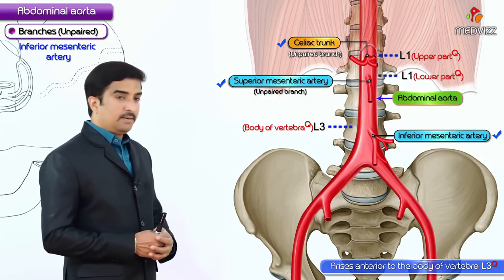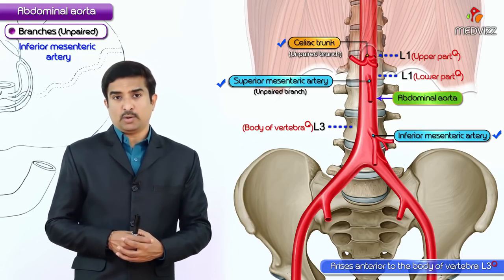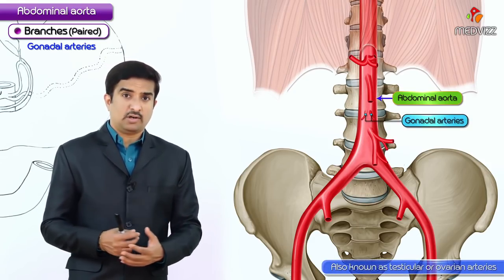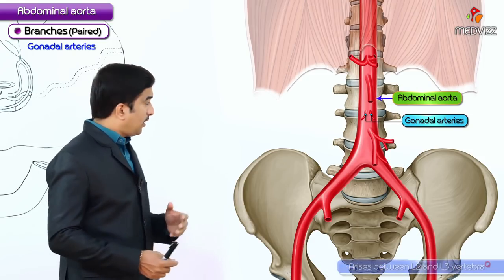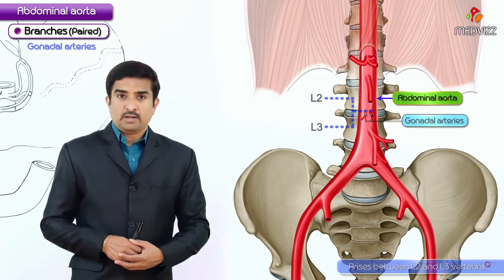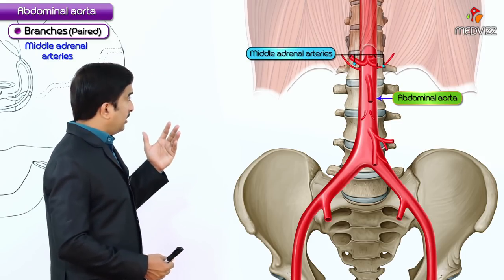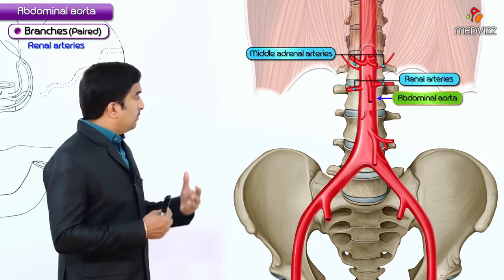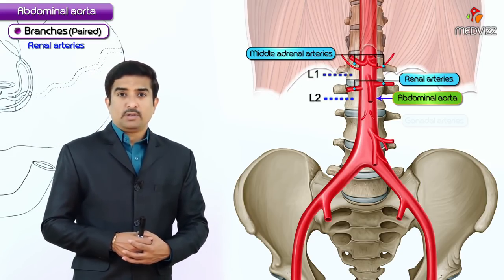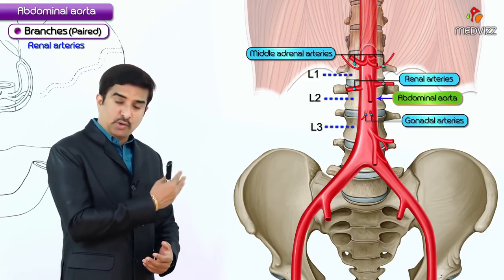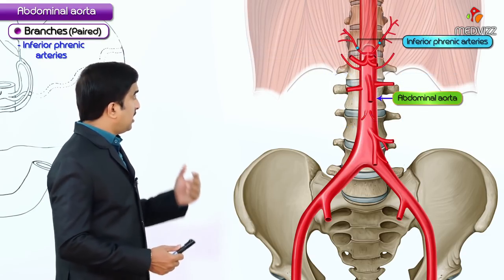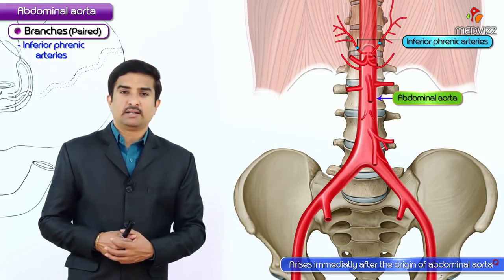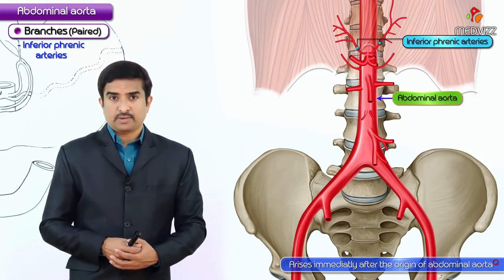There are also paired anterior branches: the gonadal arteries, also called testicular or ovarian arteries, which arise between L2 and L3. Other paired branches include the middle adrenal arteries and the renal arteries, which arise between vertebrae L1 and L2. The gonadal arteries arise between L2 and L3, and the inferior phrenic arteries arise immediately after the origin of the abdominal aorta.